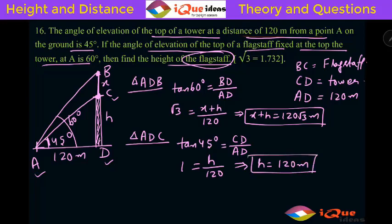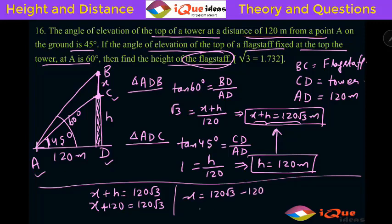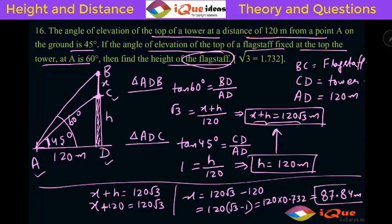If we put the value of H into the first equation, we get the value of X. So X plus H equals 120√3, substituting H equals 120 gives X plus 120 equals 120√3. Therefore X equals 120√3 minus 120. Taking 120 common, it is 120(√3 minus 1). Since √3 is 1.732, √3 minus 1 equals 0.732, so it is 120 times 0.732, which gives 87.84 meters. This is the length of the flagstaff — the answer is 87.84 meters.